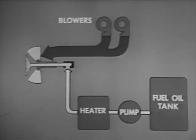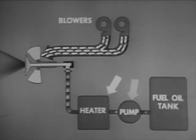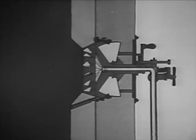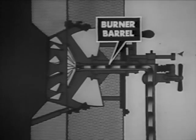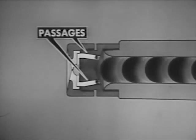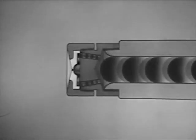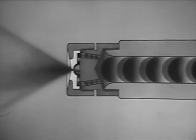The force draft blowers send a strong blast of air to the burner. The fuel oil pump sends the oil through the heater where the oil is heated to give it good flow quality. Then the oil is pumped to the burner. This simplified cutaway of the burner shows how the fuel oil is forced through the burner barrel to the atomizer nozzle, where a series of passages guide the oil to the sprayer plate. The sprayer plate makes the oil rotate at high speed, breaking up the oil into particles. The oil leaves the atomizer as a hollow, mist-like cone or spray.